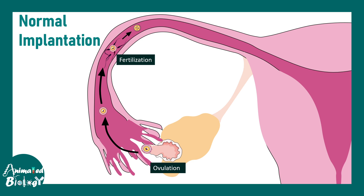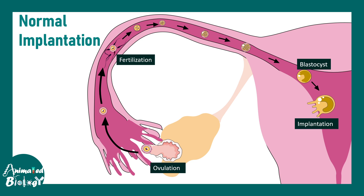After fertilization, the embryo progresses through the two-cell, four-cell, and six-cell stages, eventually forming the blastocyst. The blastocyst then travels towards the uterine cavity where implantation occurs in the endometrial lining. This is the normal process of implantation, which is disrupted in ectopic pregnancy.